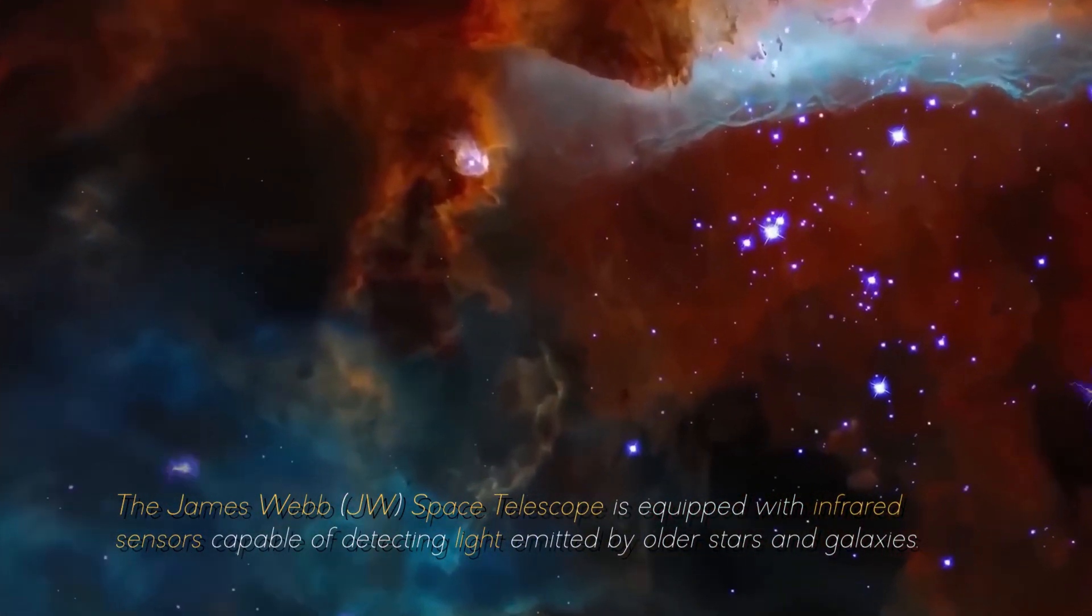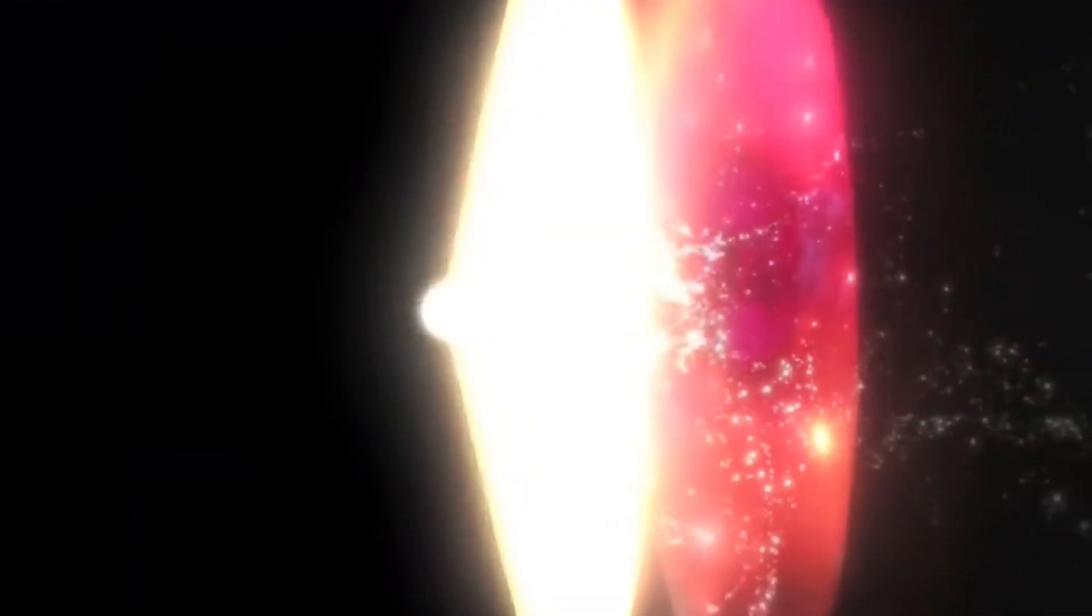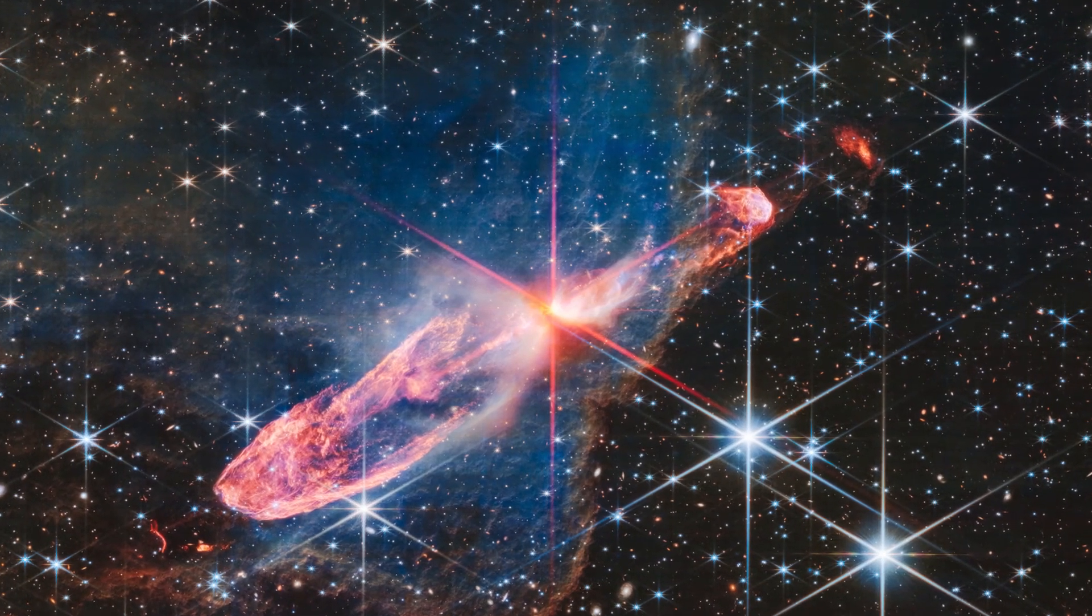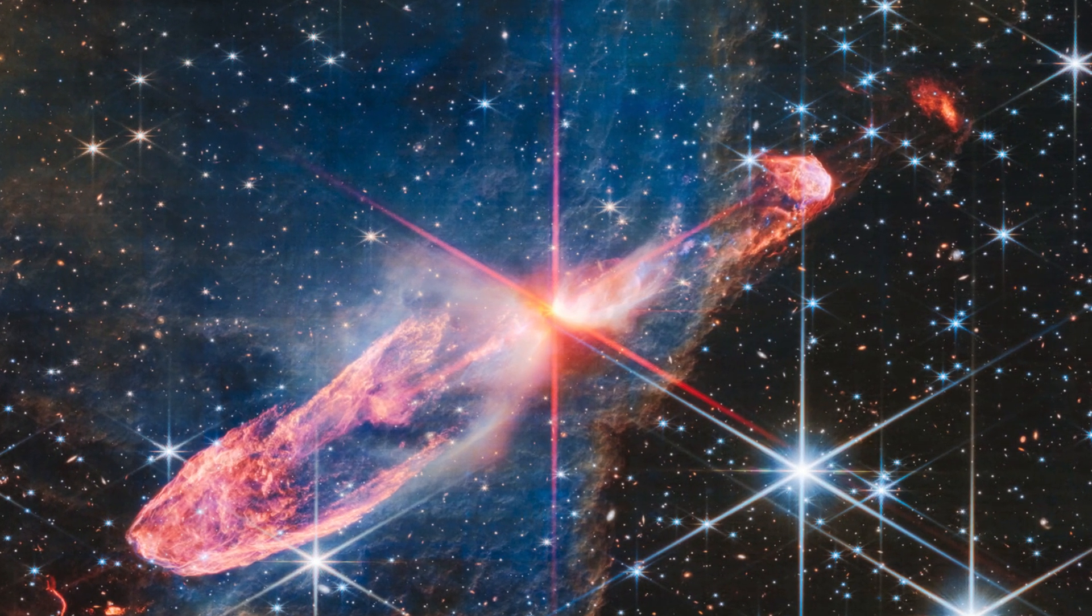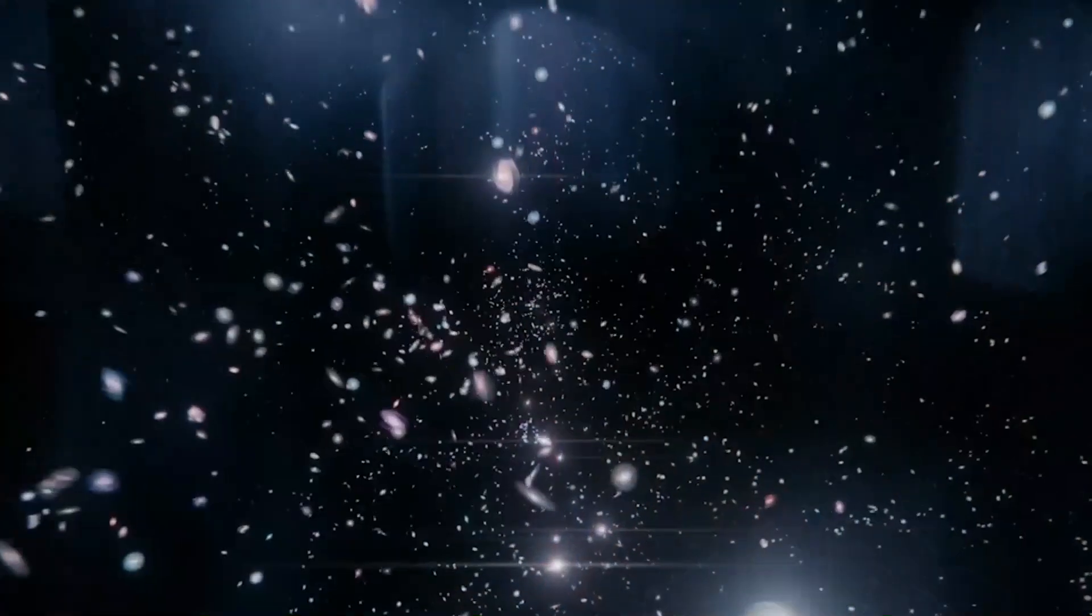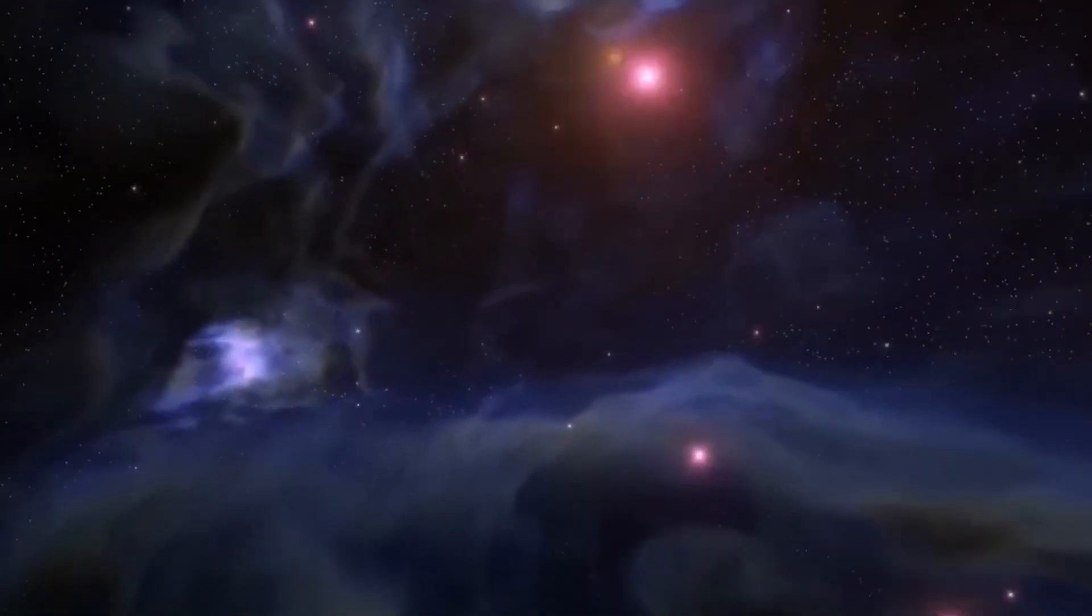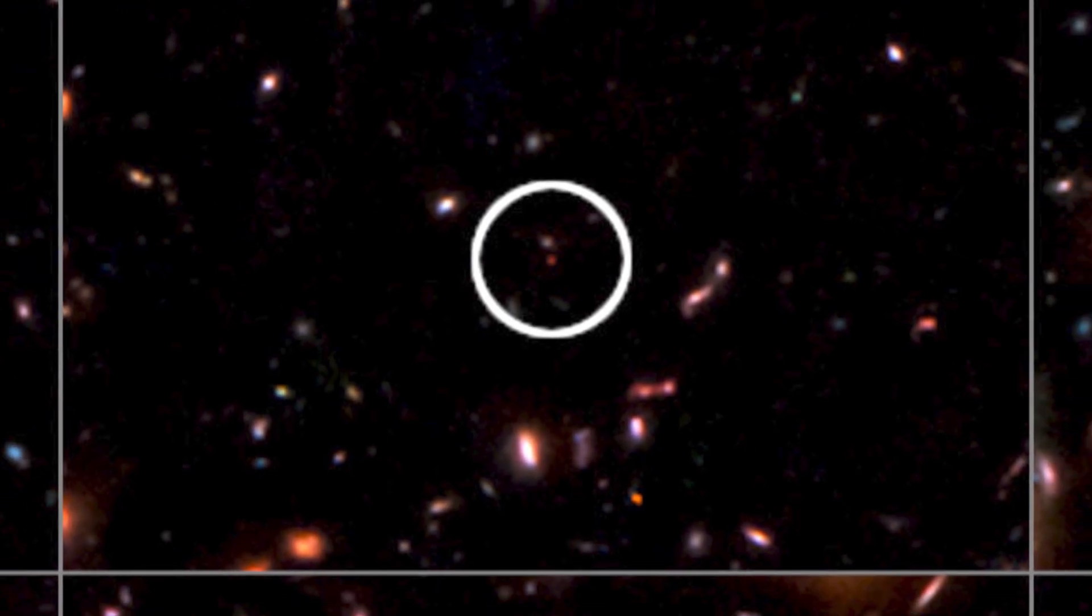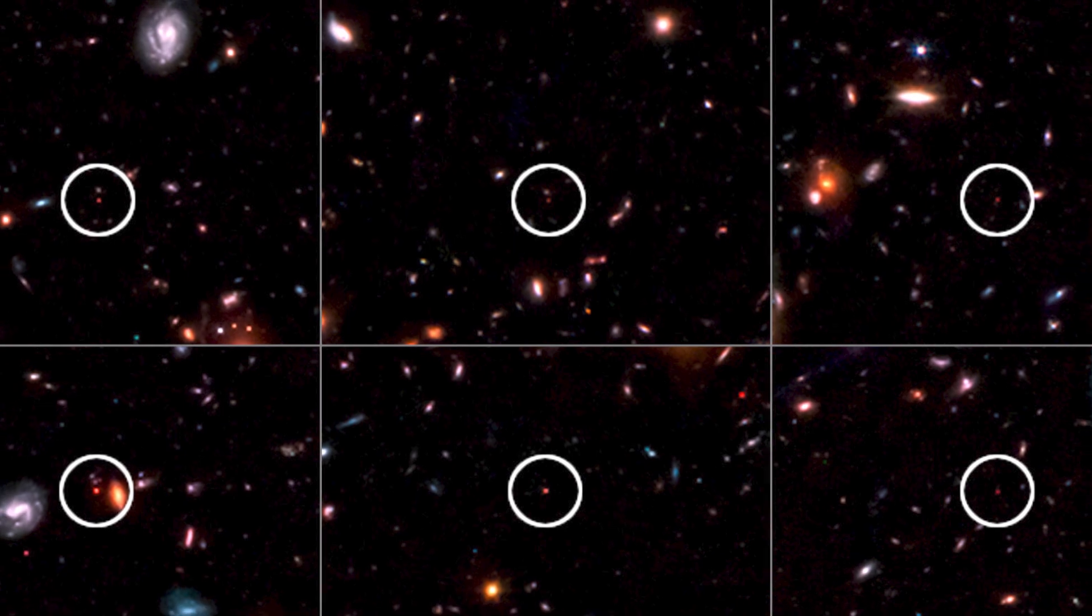The James Webb Space Telescope is equipped with infrared sensors capable of detecting light emitted by older stars and galaxies. This allows astronomers to go back in time, almost 13.5 billion years, to the beginning of the known universe. Prior to this discovery, scientists had detected numerous galaxies in the oldest regions of the universe approximately 350 million years after the Big Bang using data collected by the JW. These distant stellar systems were small and in agreement with the predictions of current cosmological models. However, the recent discovery of six massive galaxies in the same region of the early universe raises the possibility of challenging current cosmological theory and modifying what has long been considered and accepted scientific knowledge.